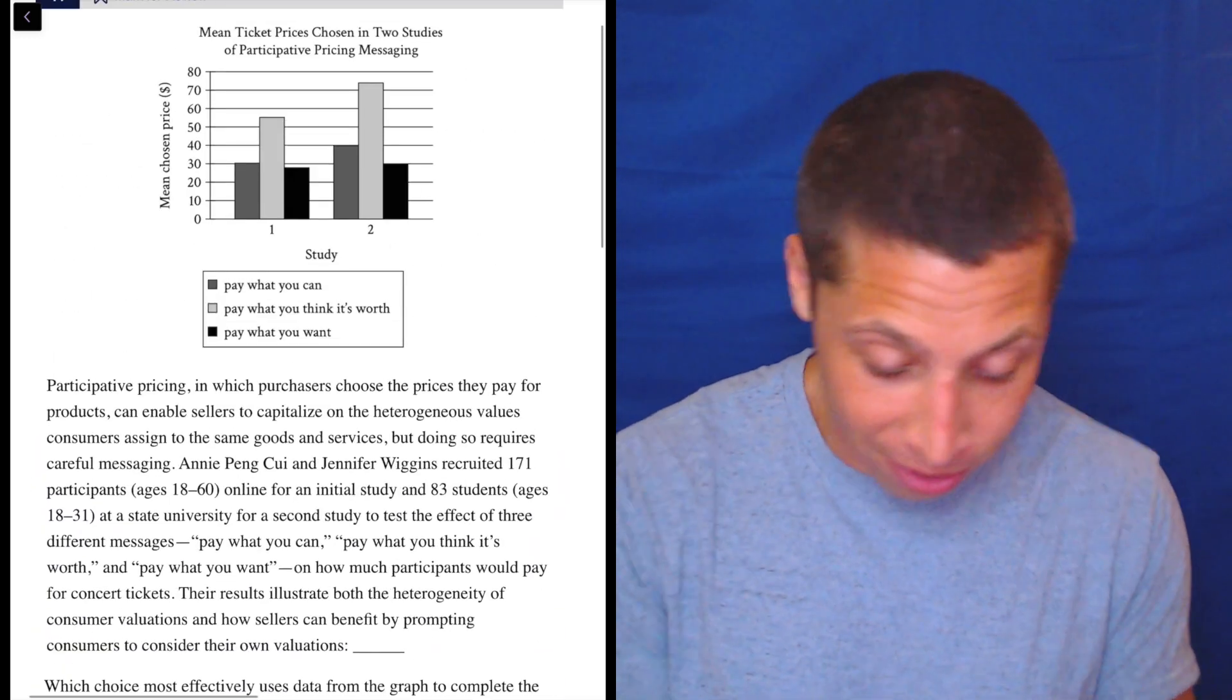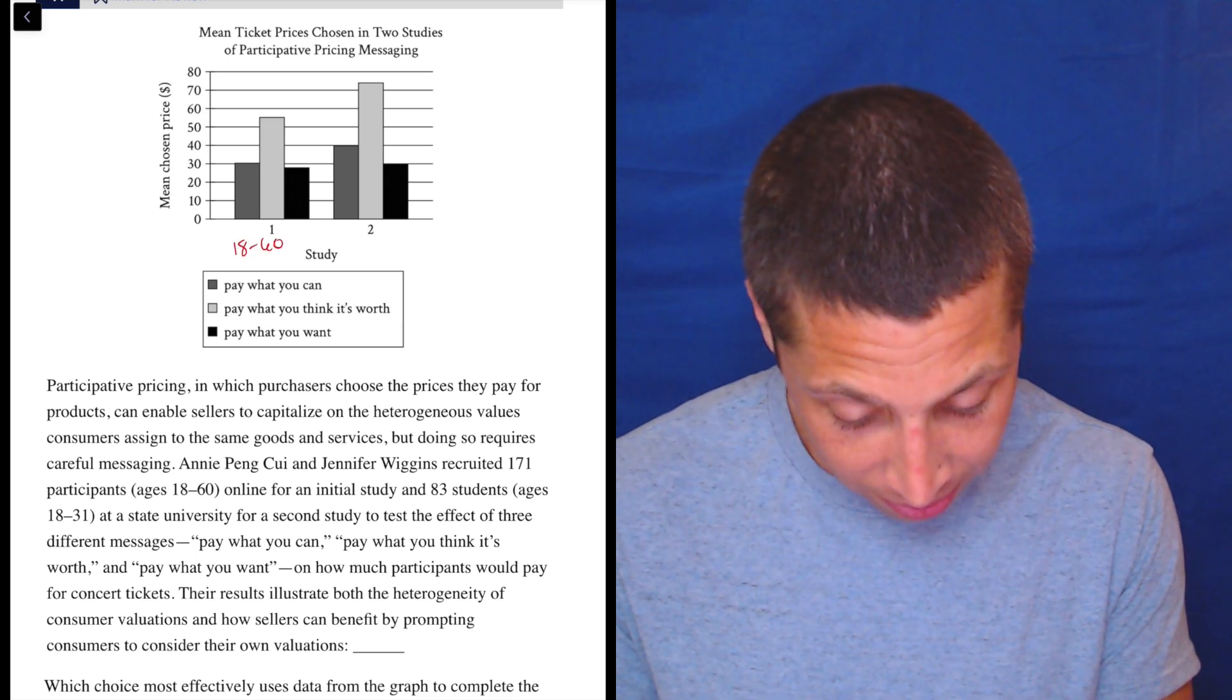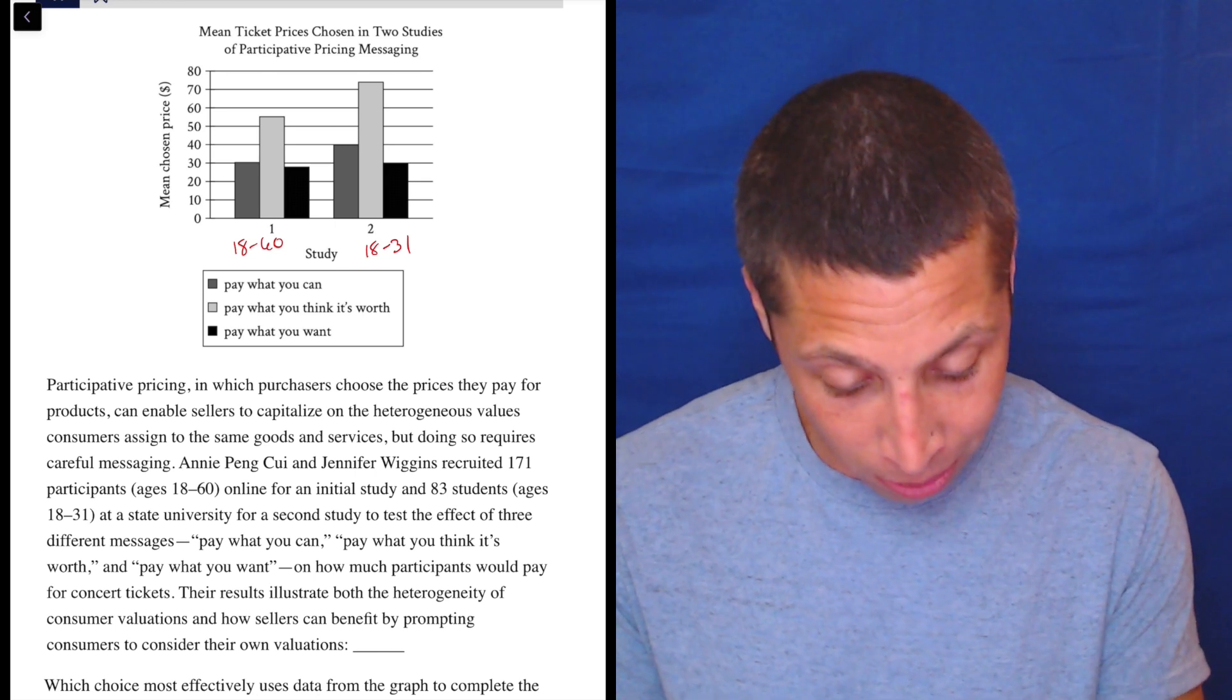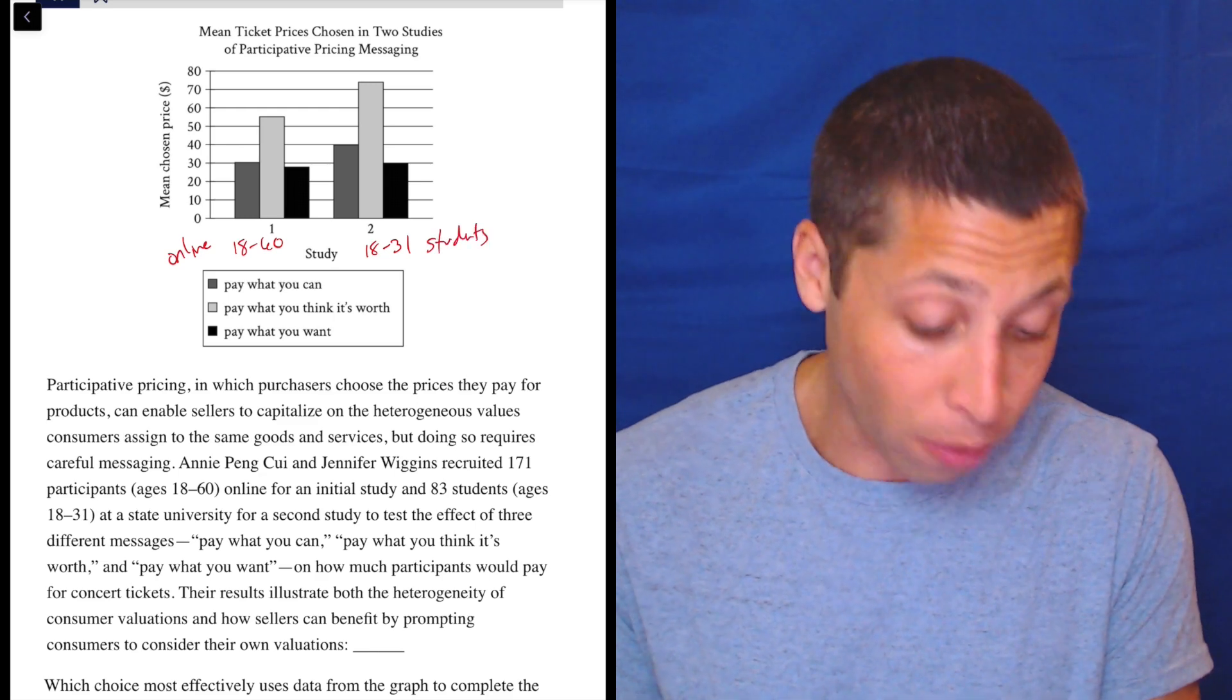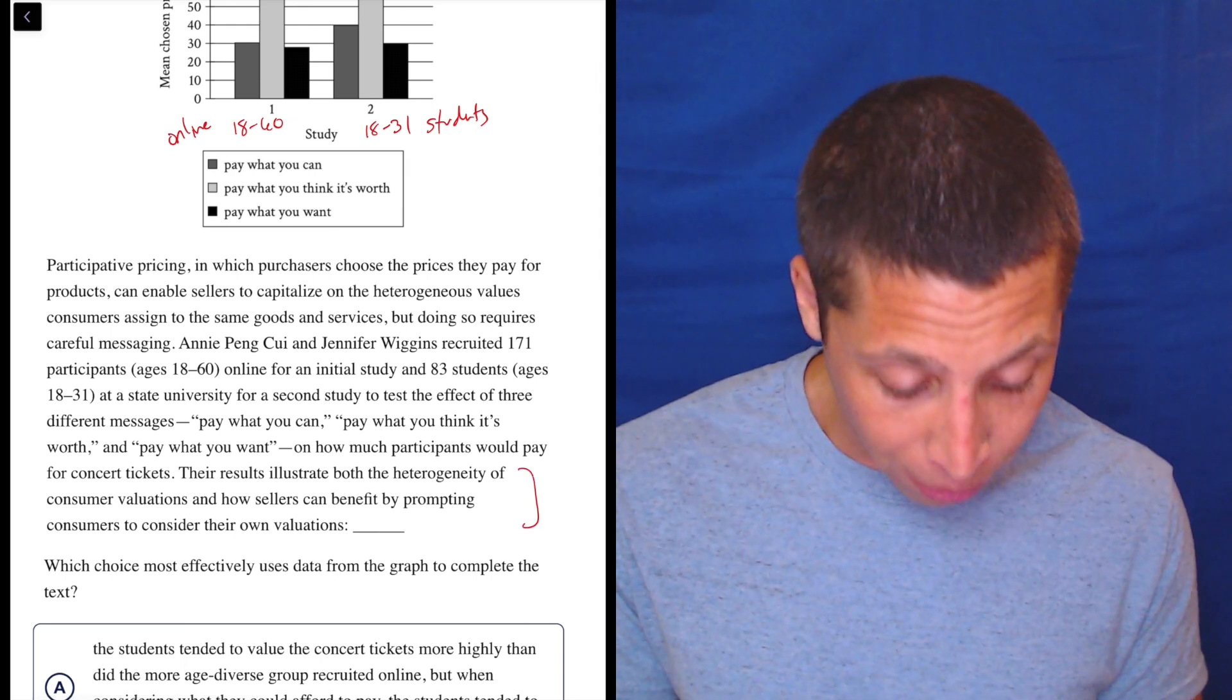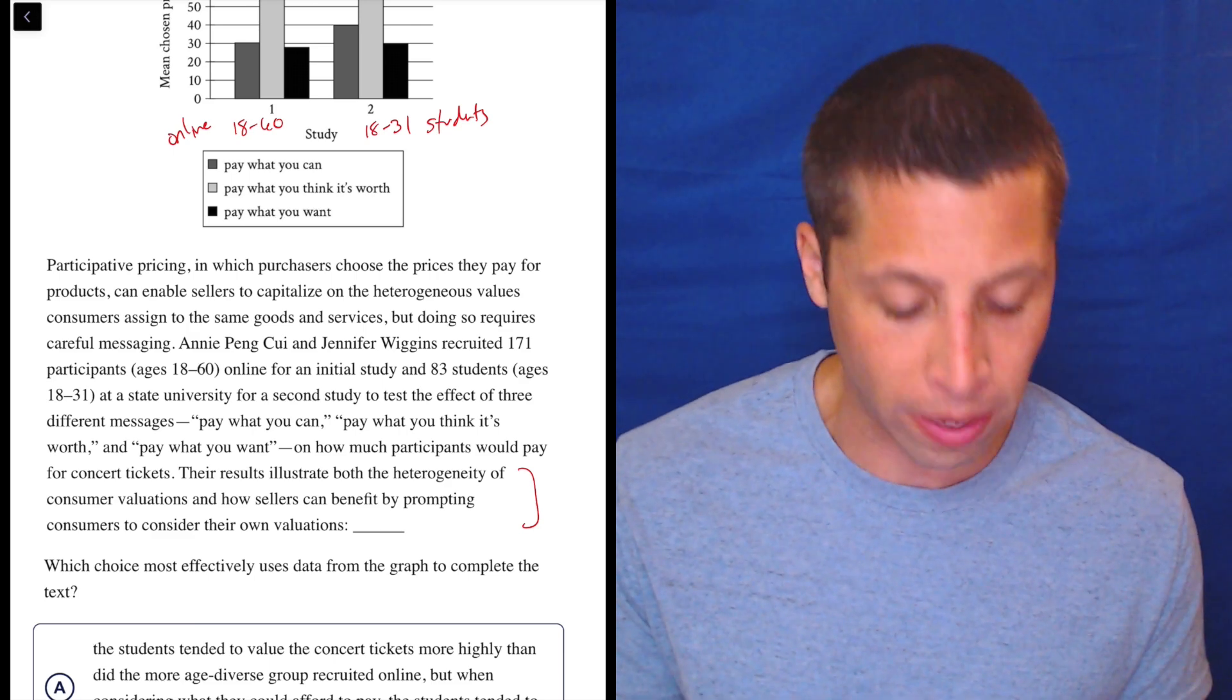So, again, a lot of this is right here. The only thing we're maybe getting is that this is the 18 to 60 crowd, this is the 18 to 31 crowd, and so these are online people, and these are students. So, I don't know if that's going to be a difference, but it's something that's not on the graph, so maybe worth paying attention to. Their results illustrate both the heterogeneity of consumer valuations and how sellers can benefit by prompting consumers to consider their own valuations.